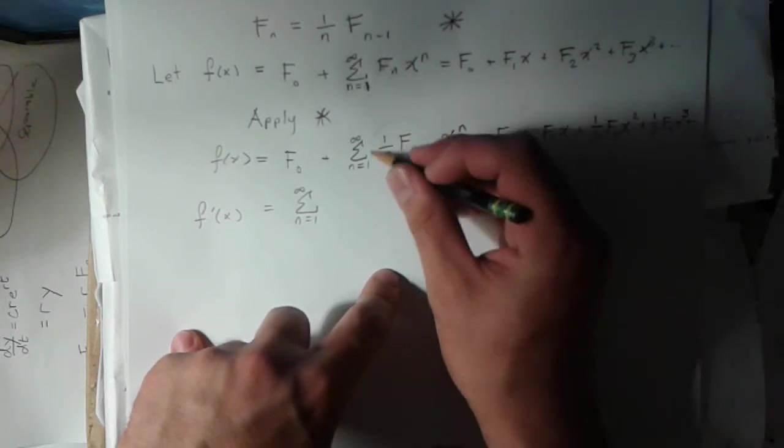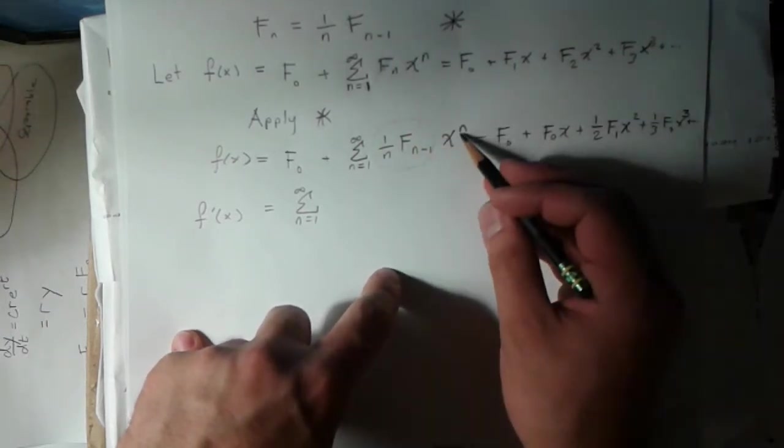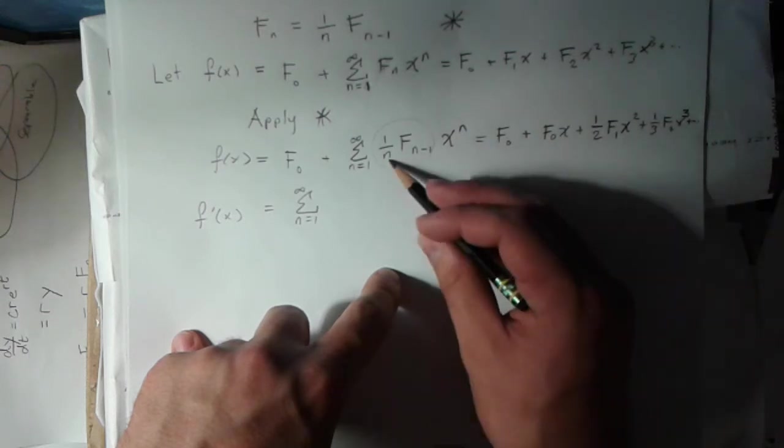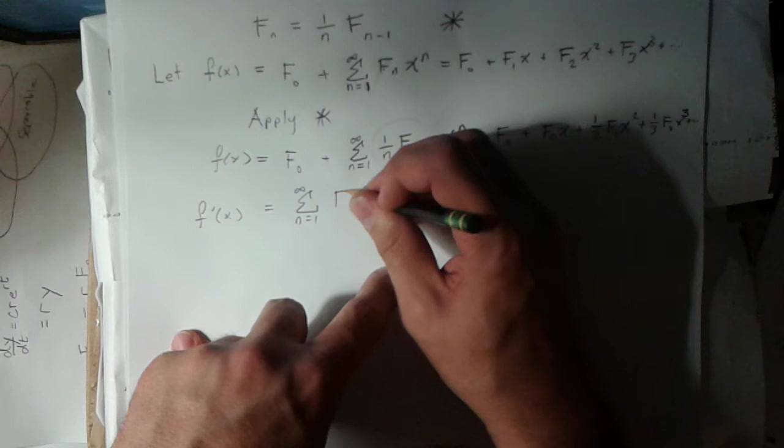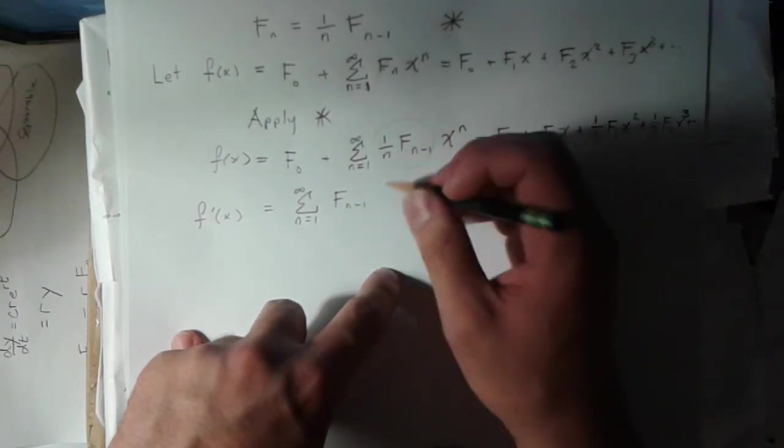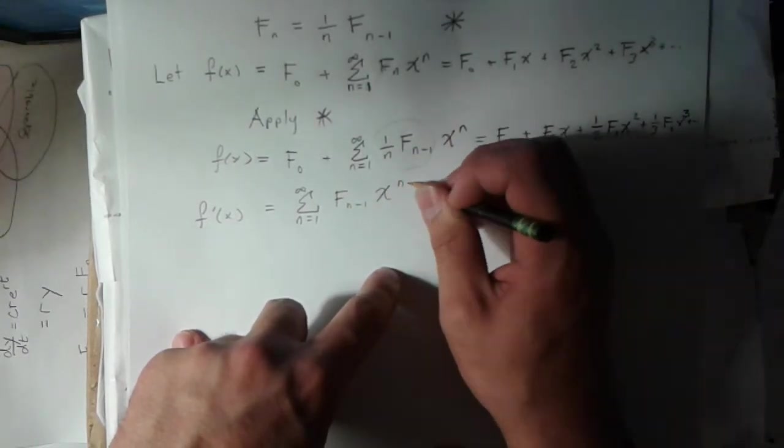All of this stuff here is constant. So this exponent is just going to come down. It's going to cancel out this 1 over n. And I'm just going to be left with f sub n minus 1 x to the n minus 1.